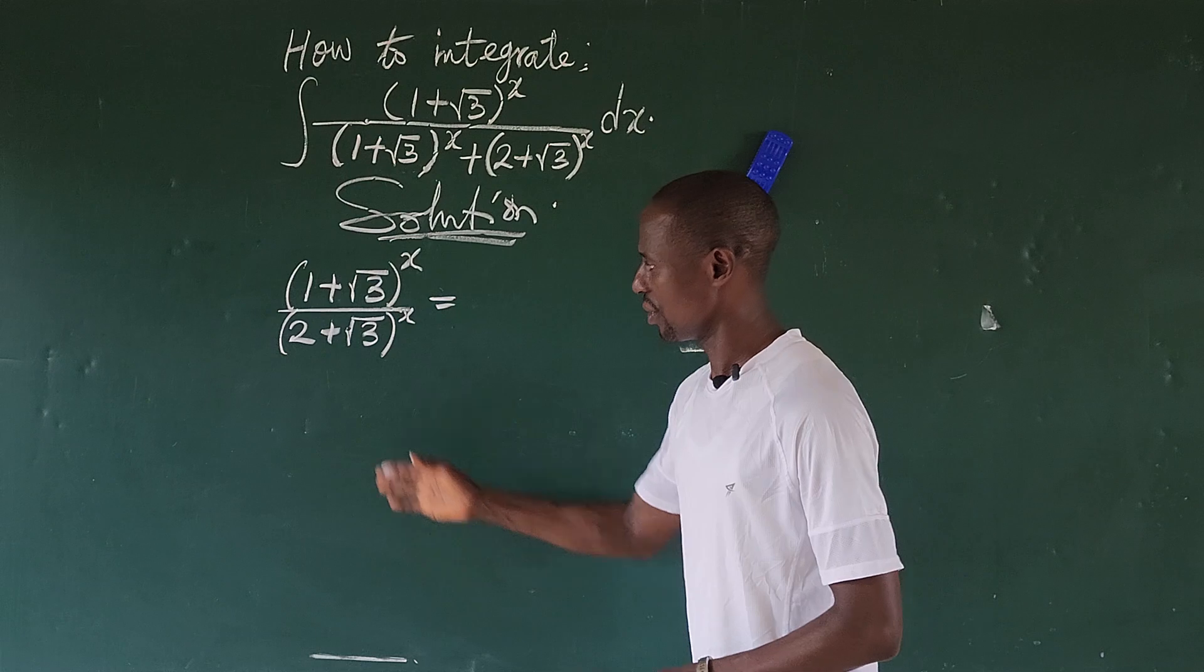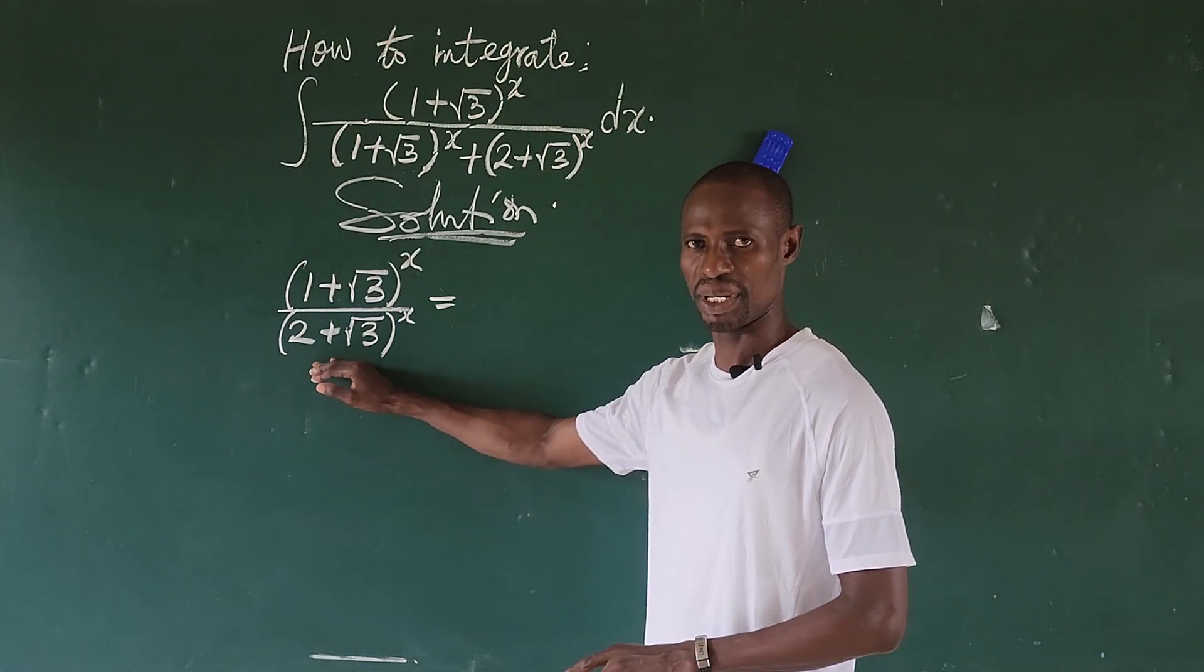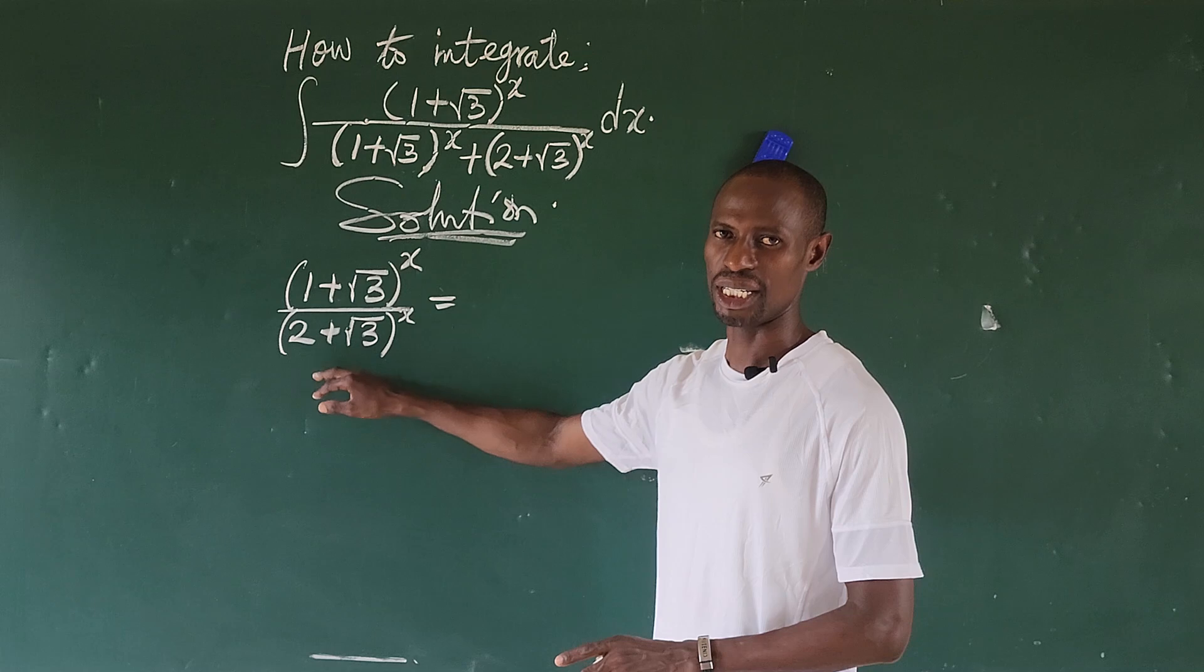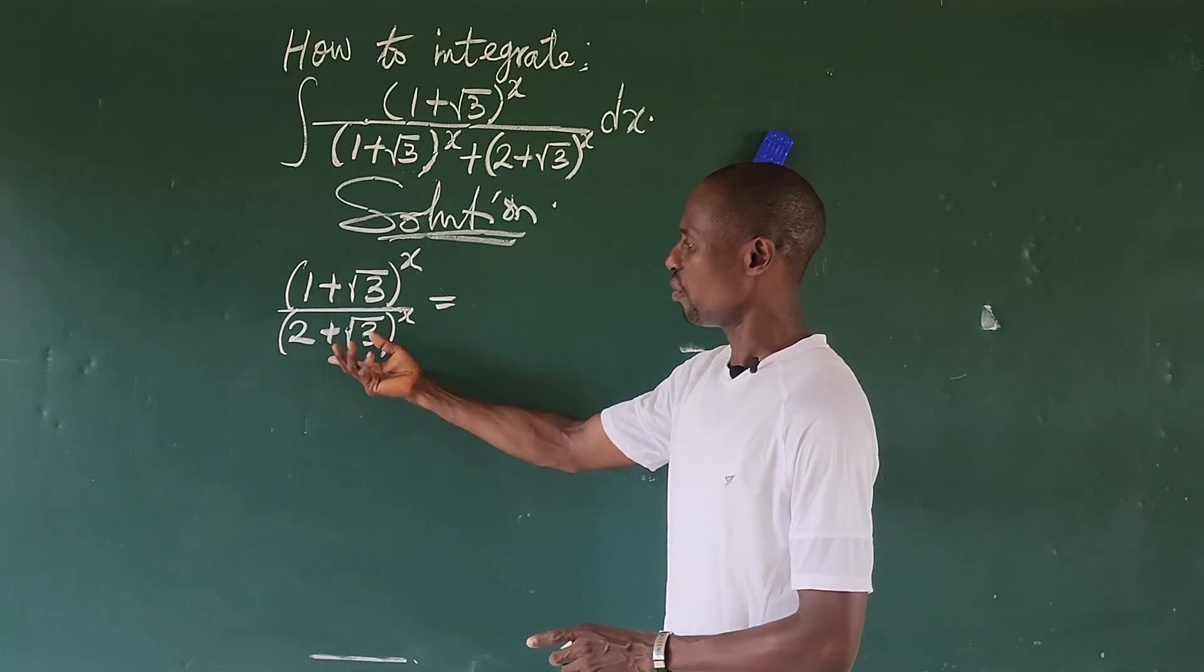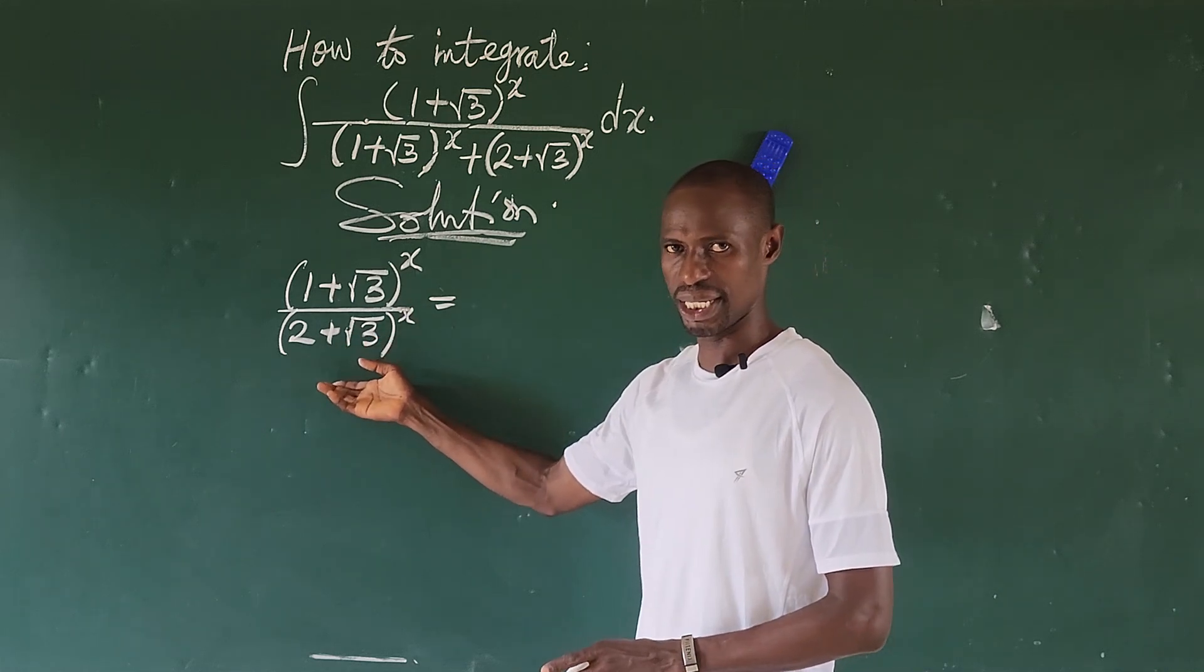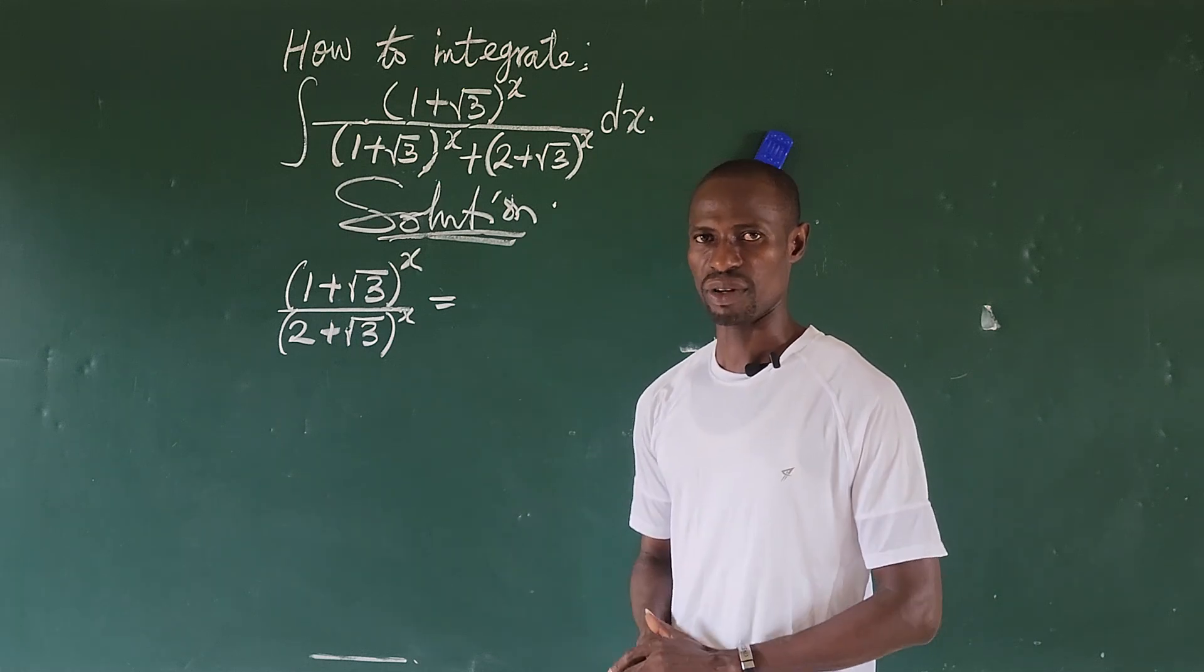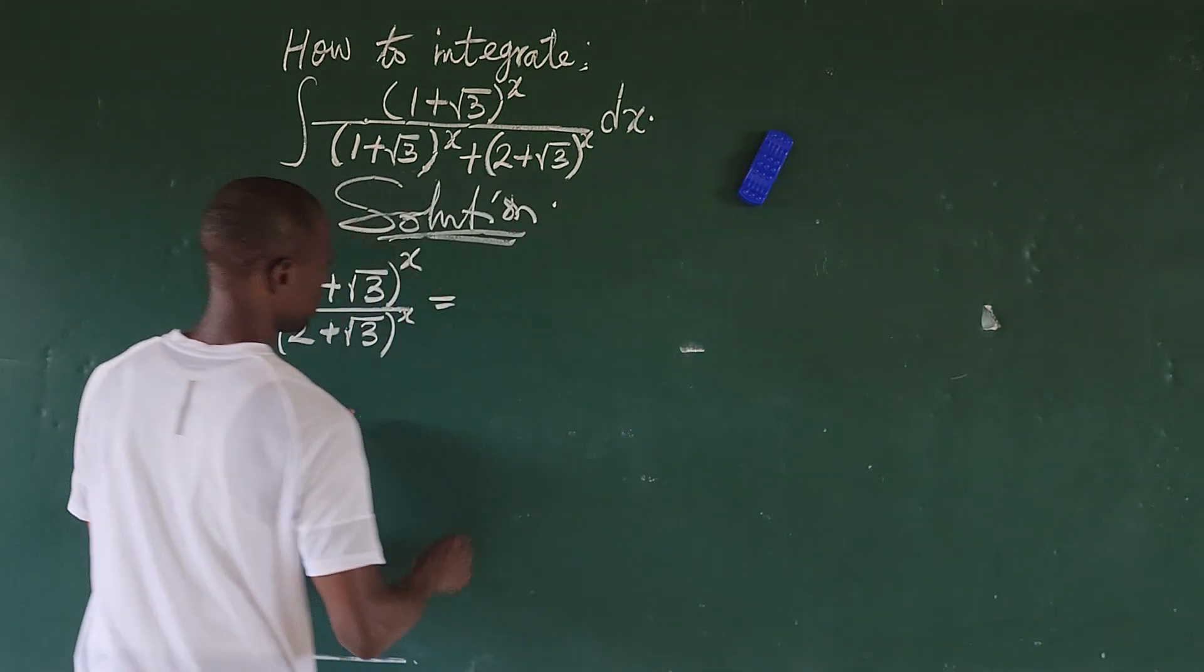So from here what we do is easy. We have to rationalize the denominator. How do we rationalize the denominator? If you have a sound knowledge in the area of surds, we just have to multiply by the conjugate here, and the conjugate of this is just 2 minus the square root of 3.